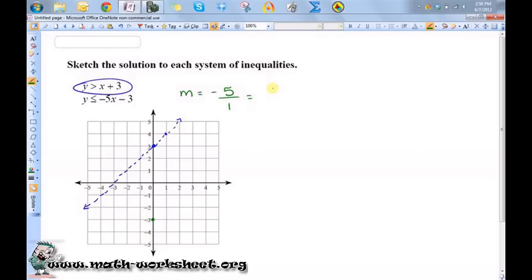Well, I can't go down 5, so what I'm going to do is rewrite it as positive 5 over negative 1. So I go up 5, 1, 2, 3, 4, 5, and over 1. So this is where they intersect.